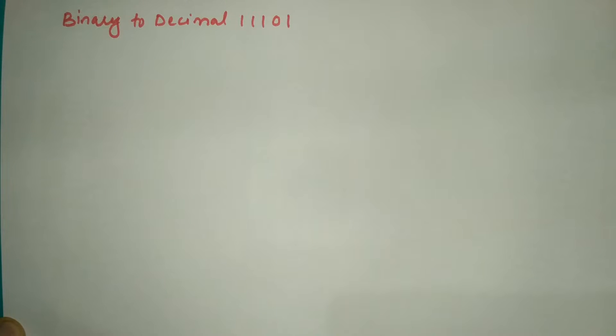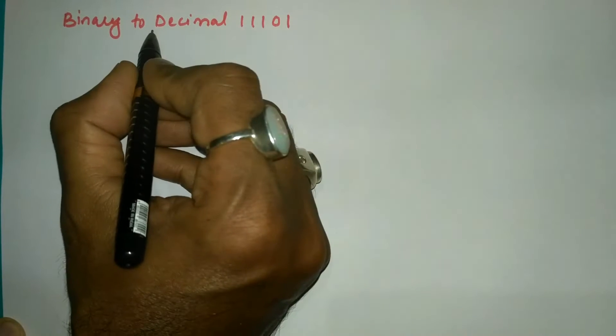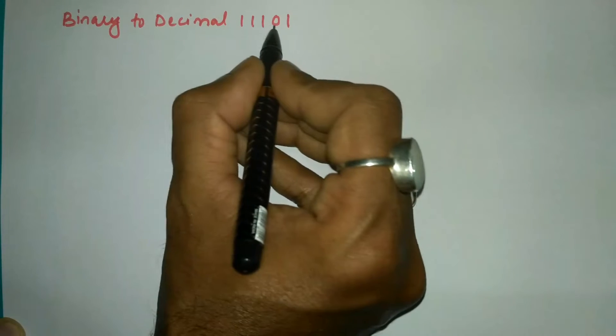Hello and welcome to Vision Academy. In this video, we are going to convert binary to decimal. The given number is 11101.